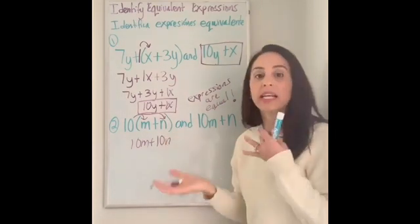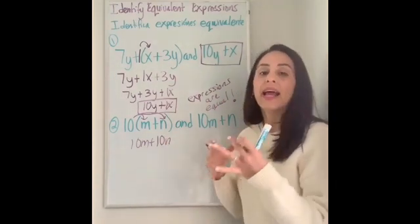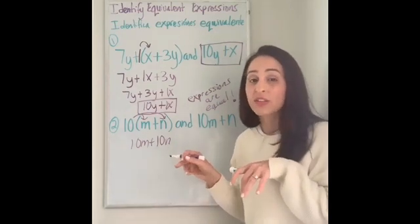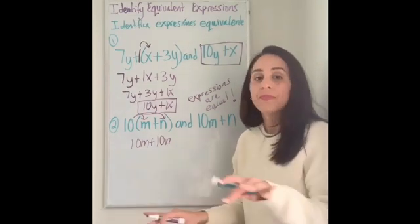There's nothing else I can do. I cannot combine m and n. They're two totally different variables, which means there's mysterious numbers behind those variables that are totally different. Can't combine them.